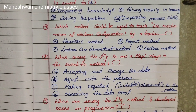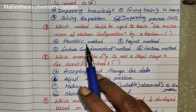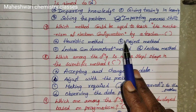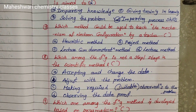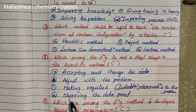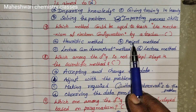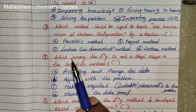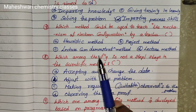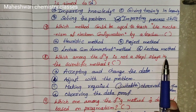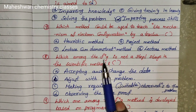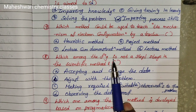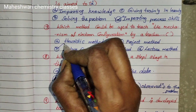Seventh question: Which method could be used to teach the mechanism of electron configuration? Options are Heuristic method, Admissions method, Project method, Lecture method, Demonstration method. The correct option is Lecture and Demonstration method. Seventh one is option C.